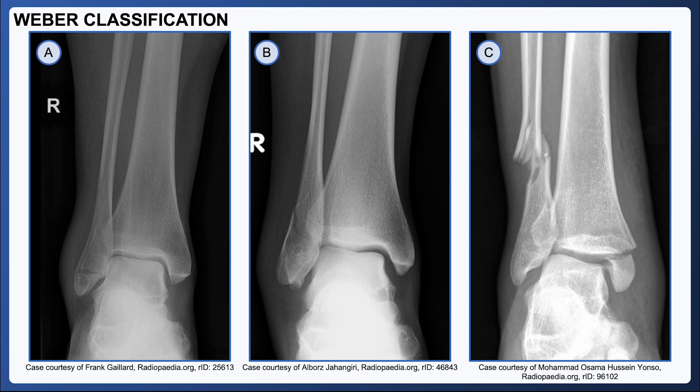Here we can see the three types of ankle fracture. The Weber classification is used to describe the different types and there are three main types: A, B, and C. Weber A fractures are distal fibular fractures that occur below the level of the syndesmosis. Weber B fractures occur at the level of the syndesmosis, and Weber C fractures occur above the level of the syndesmosis, often accompanied by a fracture of the medial malleolus.